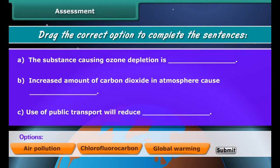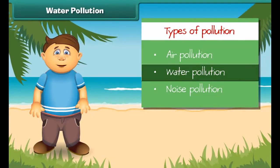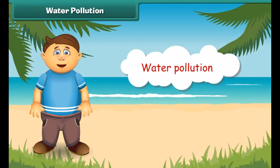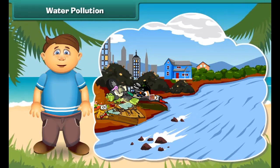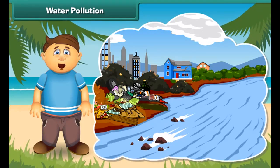Now let's know about water pollution. Like air, water also gets polluted. Look at this river — it is very dirty. It receives sewage from homes and wastes from factories. Some people also wash their clothes and throw waste into it. We should not drink this water as it contains germs and may result in diseases. Poisonous chemicals released from factories and industries enter water bodies, affecting marine life. If we consume such fish, we will also fall ill.